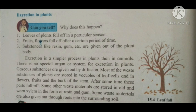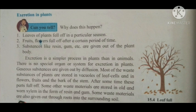It is very simple because plants are stable and there are no special organs or systems. Gases in plants are given out by simple diffusion. Most of the waste substances of the plant are stored in vacuoles of leaf cells, and in flowers, fruits, and bark of the stem.